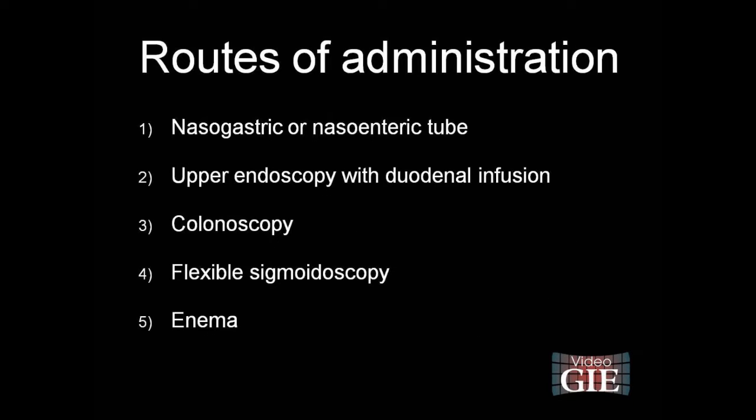Varying routes of administration are available: number one, NG or nasoenteric tube; number two, upper endoscopy with duodenal infusion; number three, colonoscopy; number four, flexible sigmoidoscopy; and number five, enema.